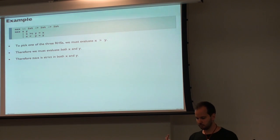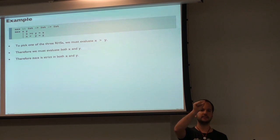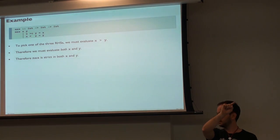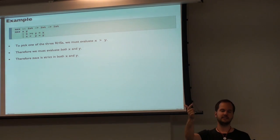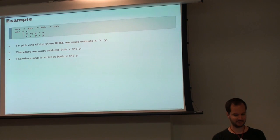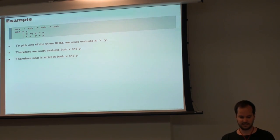So if you want to ask whether a function always evaluates something, start from the back of the function and ask: what must happen to pick each branch? You trace all the way back to the function arguments, and then you can say: we'll always evaluate x, maybe sometimes evaluate y, or perhaps never evaluate z — which would mean z probably shouldn't even be an argument.